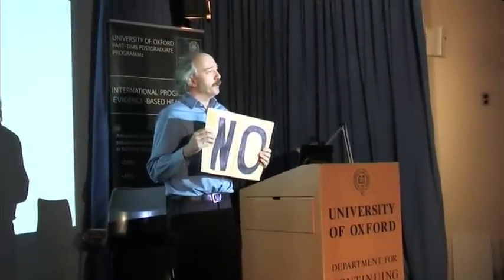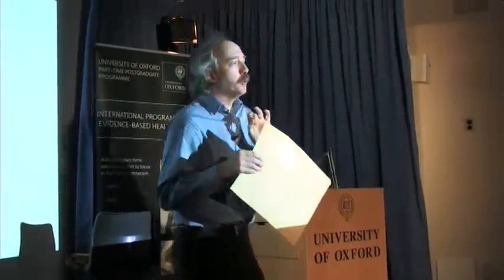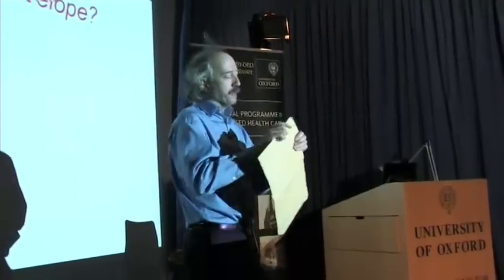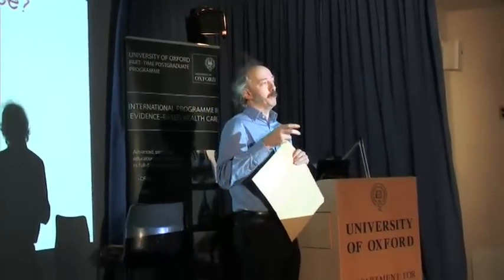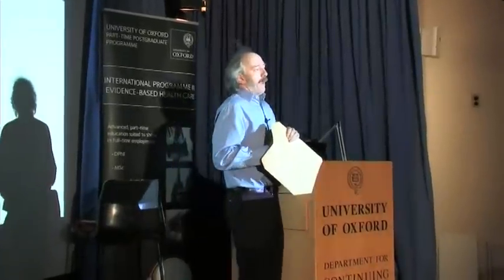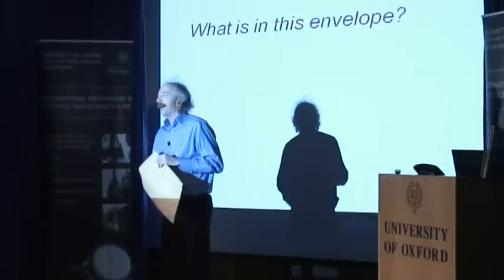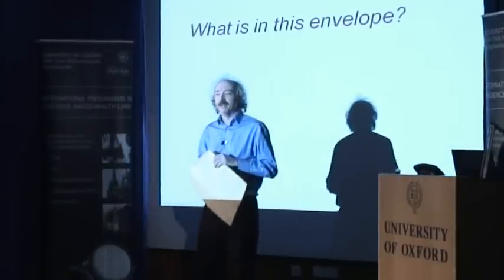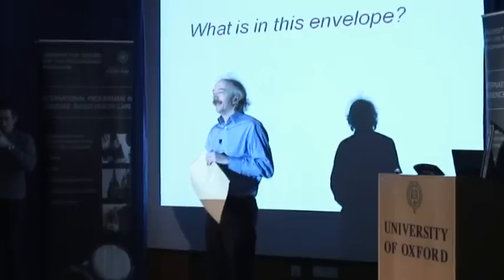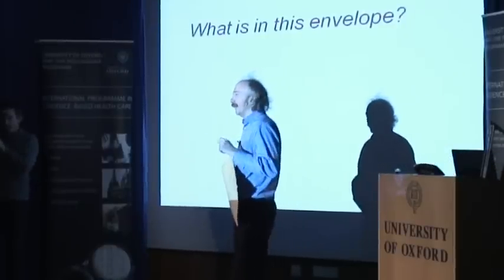Now we have to think about what's inside the envelope. When we're doing a randomized trial, what we really want to avoid is people steaming the envelope open to have a look inside and say 'I don't like that for this patient.' So there are a few things inside this envelope. I need you to tell me a farm animal — shout one out. Cow. Okay, cow. Let's have another go. Sheep. Pig.